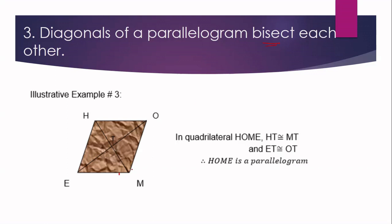We have quadrilateral HOME. Segments HM and OE are diagonals that intersect at point T. HT is congruent to MT, meaning diagonal OE bisects diagonal HM. Also, segment ET is congruent to OT, meaning diagonal HM bisects diagonal OE. So they bisect each other, which guarantees that quadrilateral HOME is a parallelogram, because if the diagonals of a quadrilateral bisect each other, then it is a parallelogram.